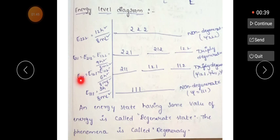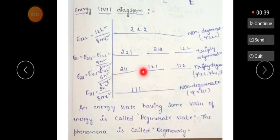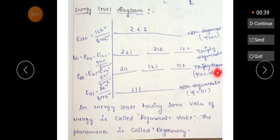Next, consider E211, where nx = 2, ny = 1, nz = 1. This state has 3 possibilities: (2,1,1), (1,2,1), and (1,1,2). Because it has 3 possibilities with the same energy, it exhibits triplet degeneracy.